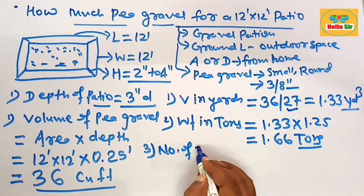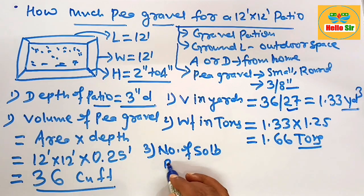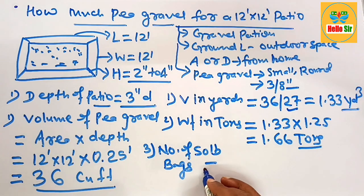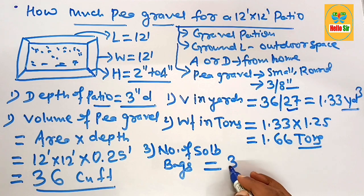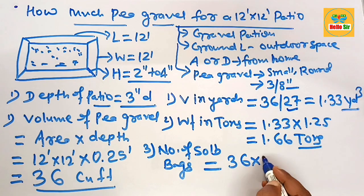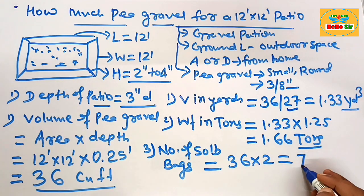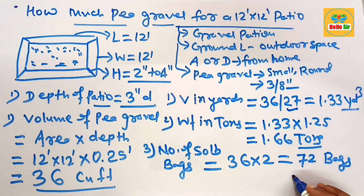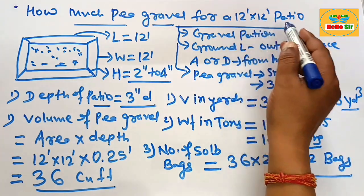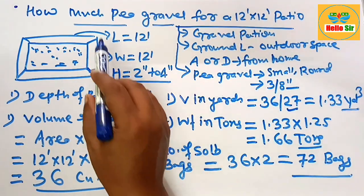Now calculate the number of 50 lb bags. To calculate the bags of pea gravel you multiply the cubic foot that is 36 by 2, it means you need 72 bags of pea gravel to build a 12 foot by 12 foot patio.